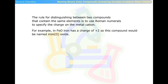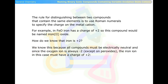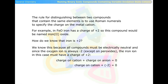For example, in FeO, iron has a charge of plus two, so this compound would be named iron(II) oxide. We know this because all compounds must be electrically neutral, and since the oxygen ion is always negative two, the iron ion must have a charge of plus two. The charge on cation plus charge on anion equals zero; charge on cation plus negative two equals zero; therefore charge on cation equals positive two.